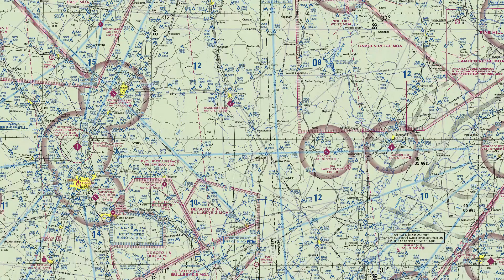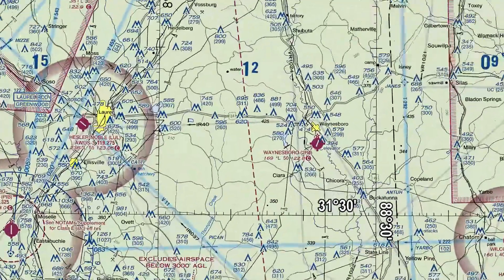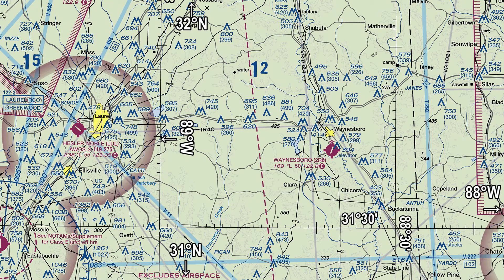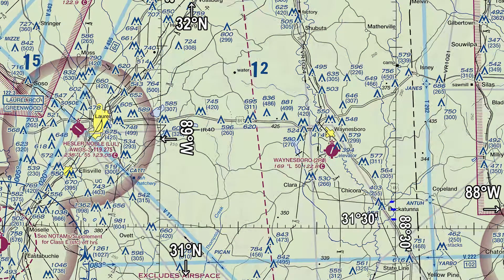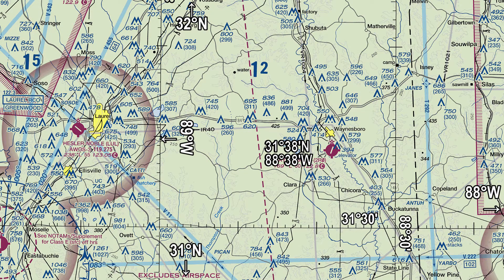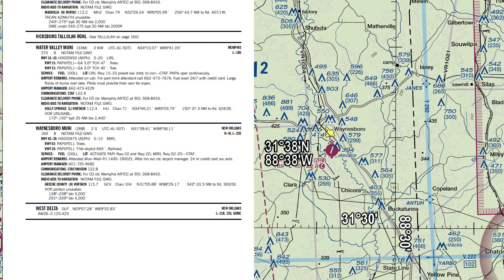Using those tick marks, we can find the latitude and longitude of an airport. For Waynesboro Airport, 31 degrees is on the bottom right. Counting up, it's just below the 9 mark, so the latitude is about 31 degrees 38 minutes. For longitude, right in between is 88 degrees 30 minutes, and this looks to be right at 88 degrees 38 minutes west. So the airport location is 31°38' N and 88°38' W — which matches what's shown in the chart supplement for Waynesboro Municipal.